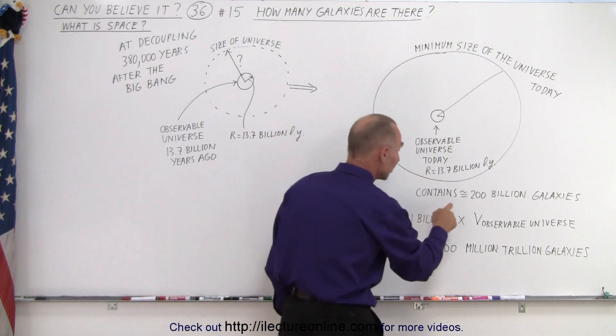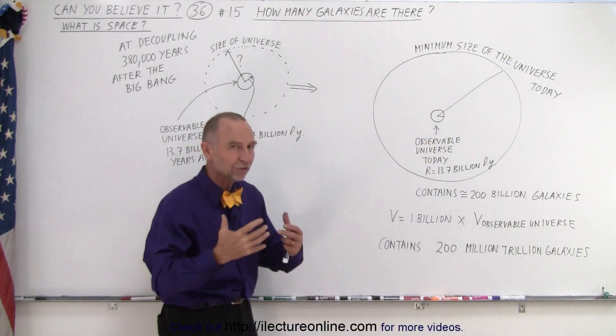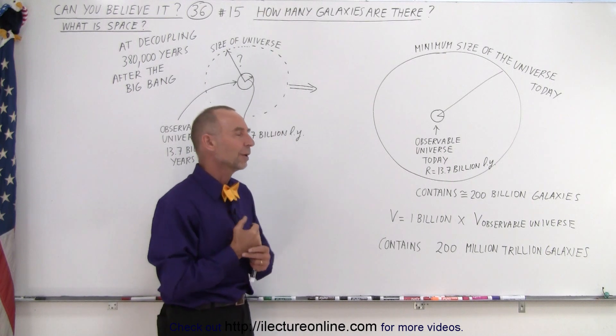And the observable universe today contains about 200 billion galaxies based upon the pictures we took with the Hubble Space Telescope.